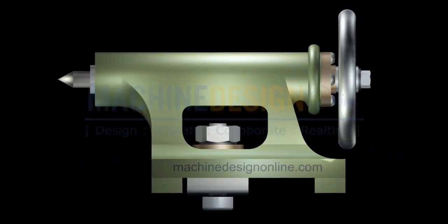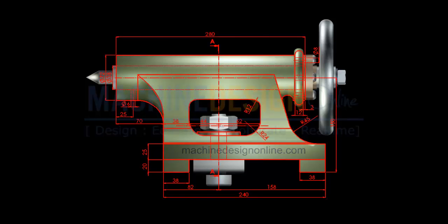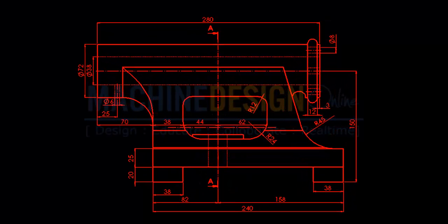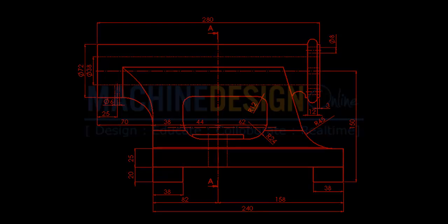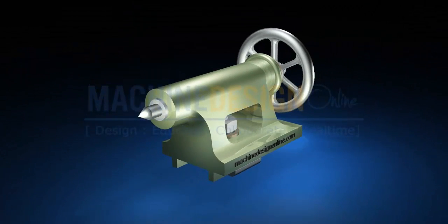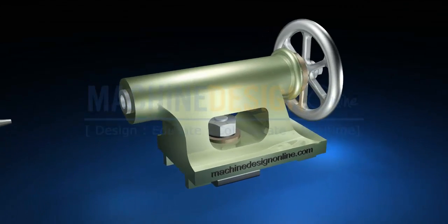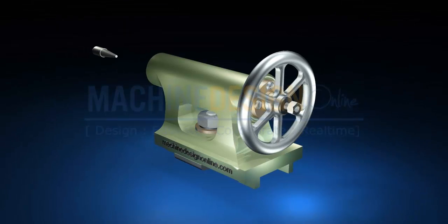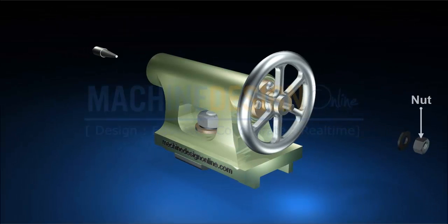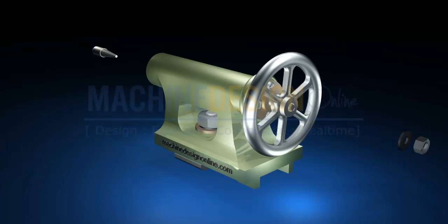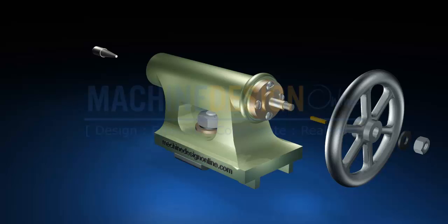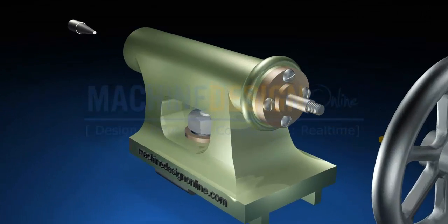We need to draw section elevation and end view of tailstock. We are having details of tailstock like part drawing of tailstock body, center, nut, washer, hand wheel, feather keys, and screw.